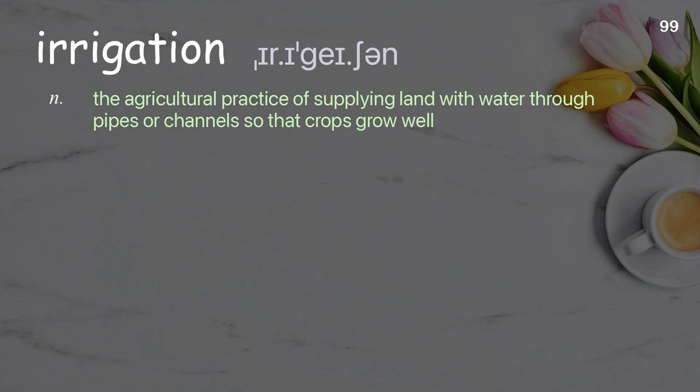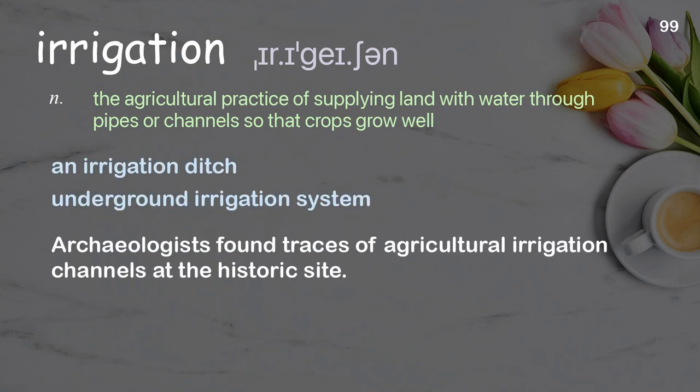Irrigation: The agricultural practice of supplying land with water through pipes or channels so that crops grow well. Examples: An irrigation ditch. Underground irrigation system. Archaeologists found traces of agricultural irrigation channels at the historic site.